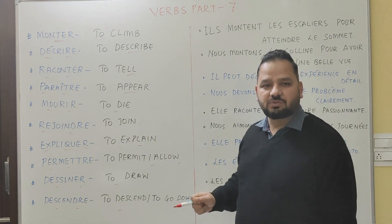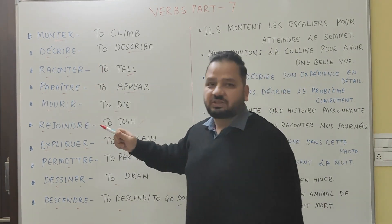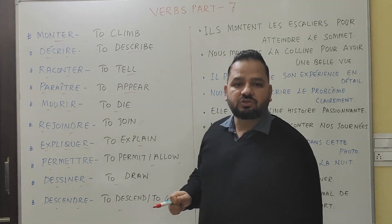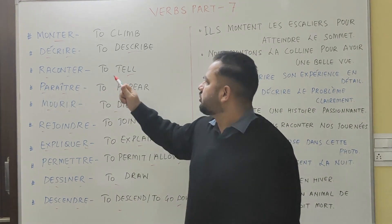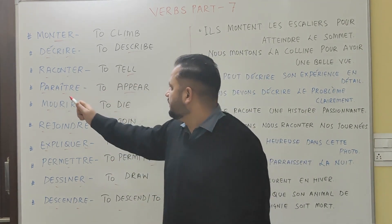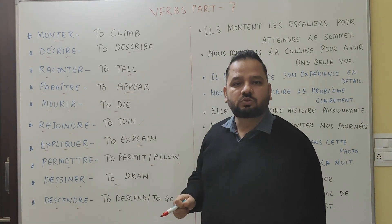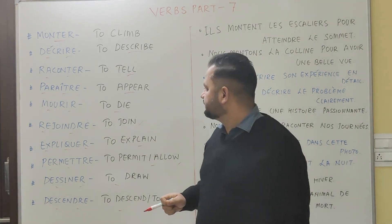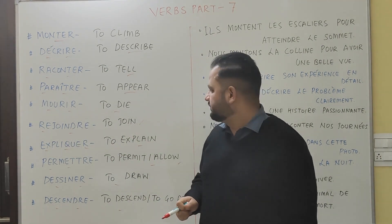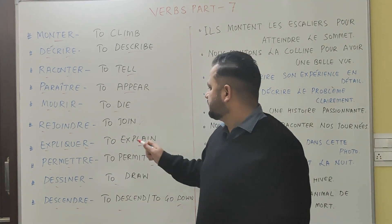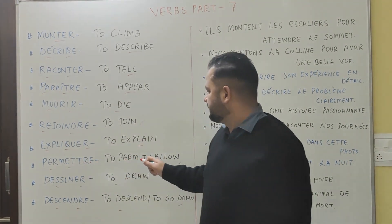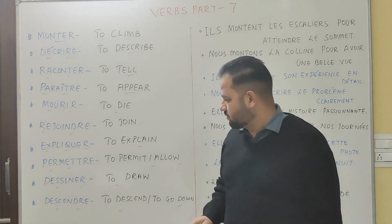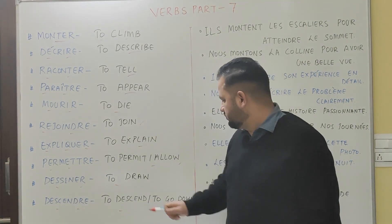Let's repeat once more, and you can also repeat after me. Monter - to climb. Décrire - to describe. Raconter - to tell. Paraître - to appear. Mourir - to die. Joindre - to join. Expliquer - to explain. Permettre - to permit or to allow. Dessiner - to draw. And Descendre - to descend or to go down.